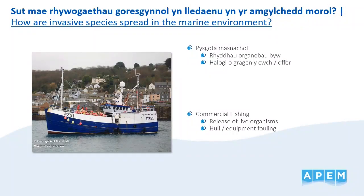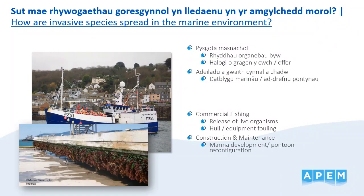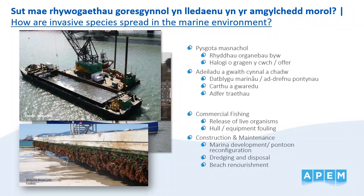Other pathways include commercial fishing, where live organisms without commercial value might be thrown overboard while underway, or through the fouling of boat hulls and equipment. Construction and development of harbours and ports can introduce and spread INNS too. Pontoons may be transported from one location to another and may have fouling organisms on them. Dredging in one location and moving the material to another, for example for beach renourishment or other beneficial uses, may also spread INNS, though the survival of organisms during this process is being looked at more closely.